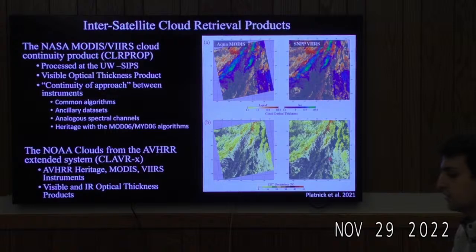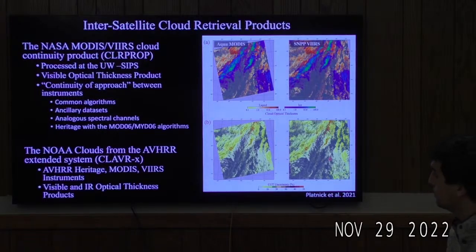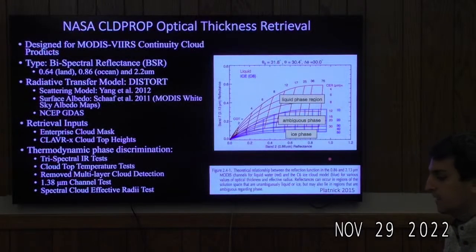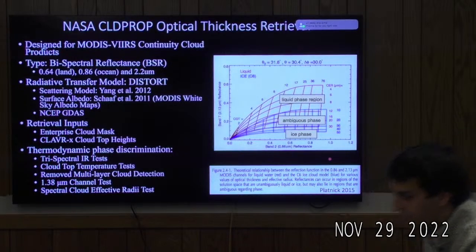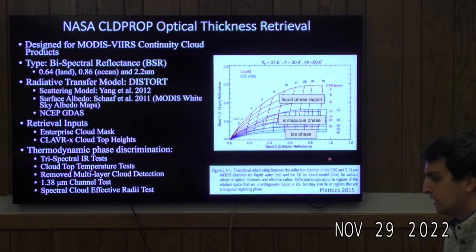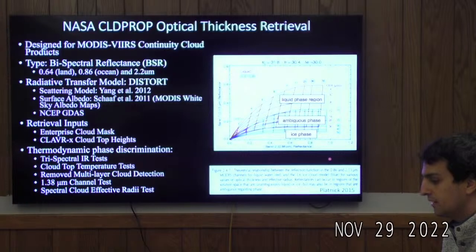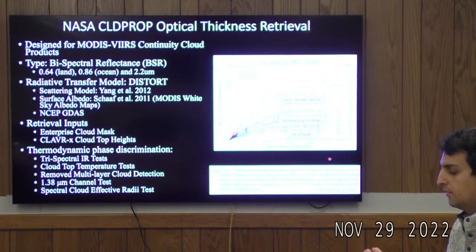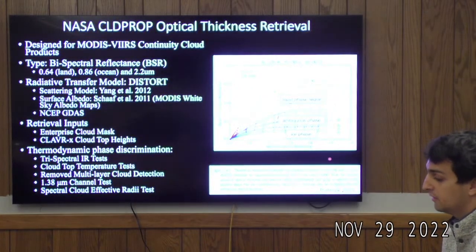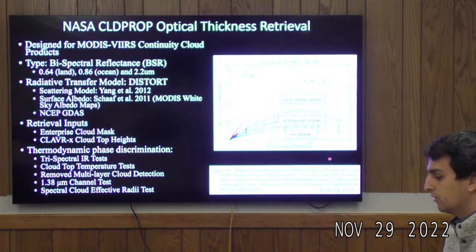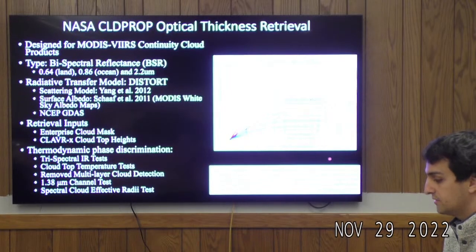Another inter-satellite cloud retrieval product is the NOAA Clouds from AVHR Extended system, CLAVRX, which has AVHR heritage and can process MODIS and VIIRS instruments—it has a visible and infrared optical thickness product. The NASA cloud property optical thickness retrieval is a bispectral reflectance retrieval. It utilizes the 0.64 micron channel and the 0.86 micron channel over land—a non-absorbing shortwave channel with high sensitivity to optical thickness. Adding the 2.2 micron channel gives sensitivity to particle size. The premise of this two-channel approach is that the backscatter signature of the cloud can be more accurately described by incorporating not just the shortwave non-absorbing channel, but also the channel with sensitivity to particle size.